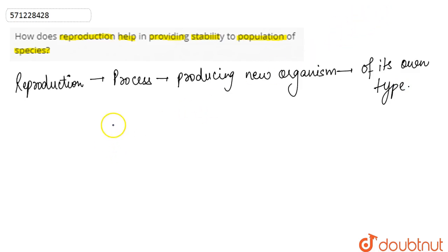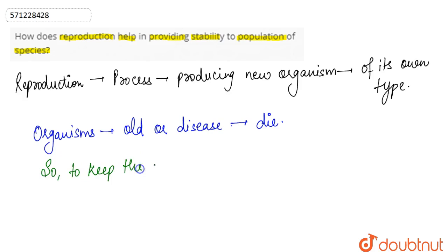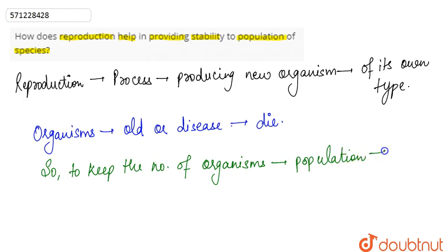Reproduction is necessary for providing stability to the population of species because, as organisms become old or acquire some disease, the organisms die. So, to keep the number of individuals and organisms in a population constant, it is very necessary to reproduce and produce new progenies.